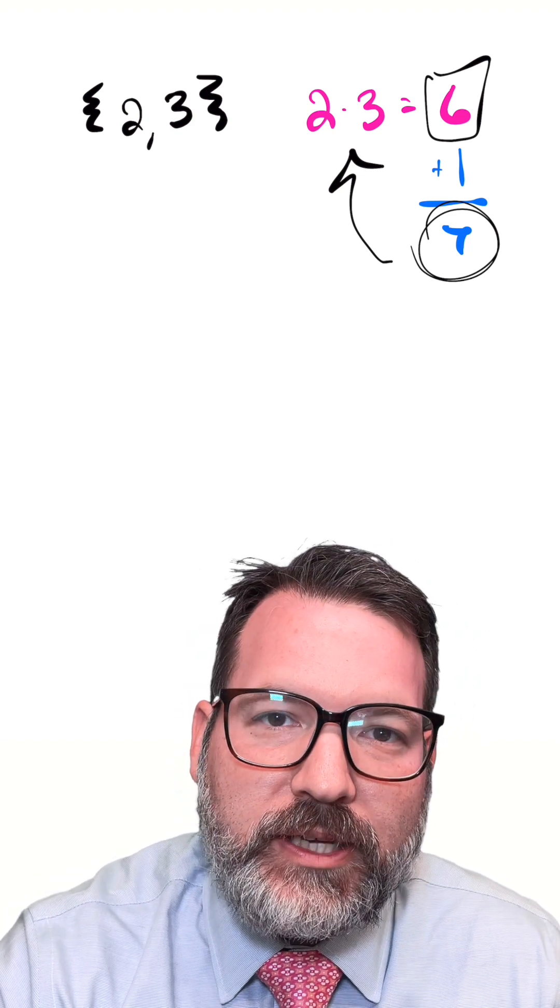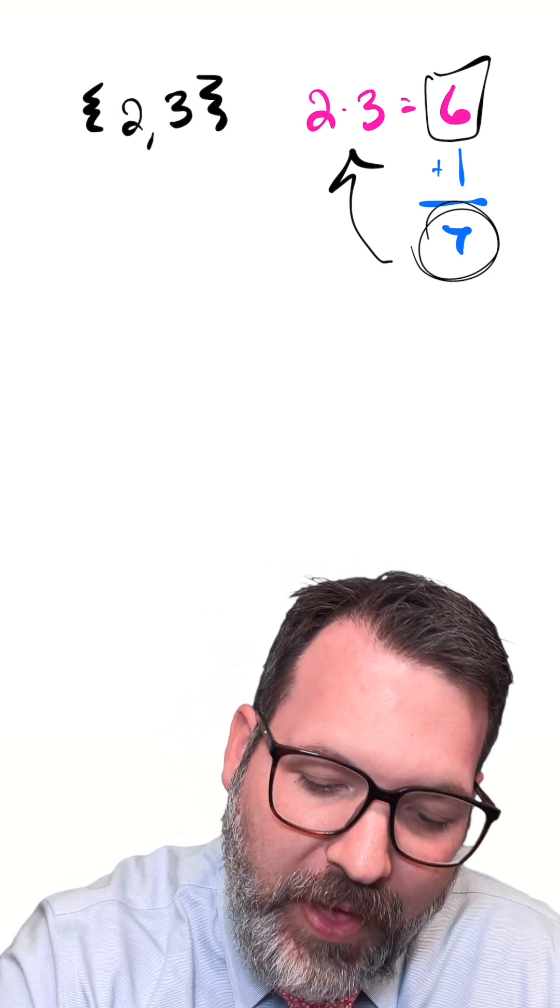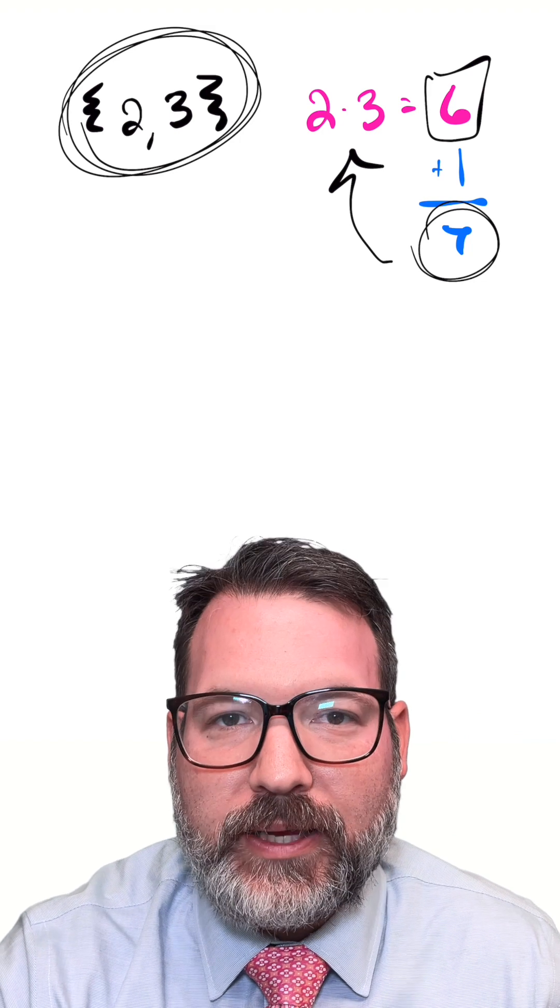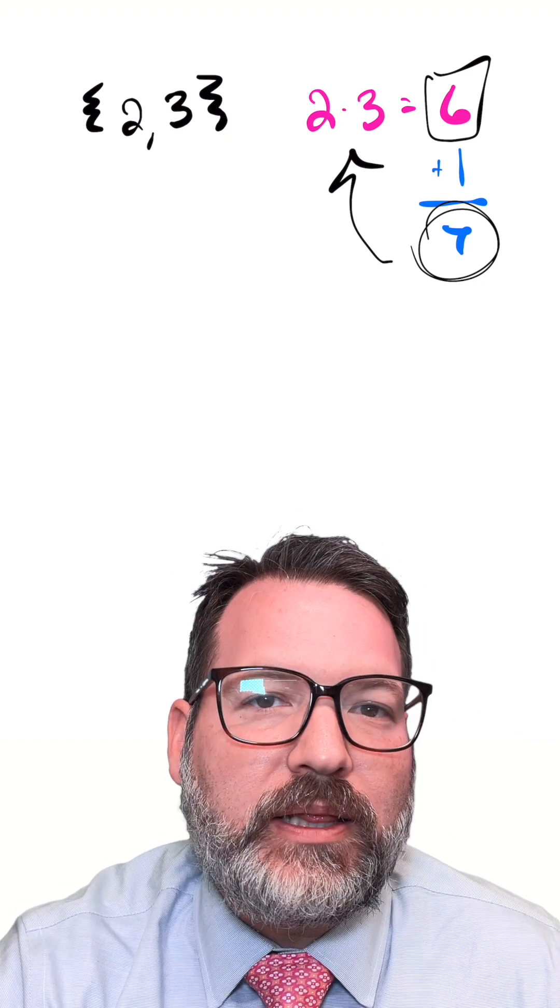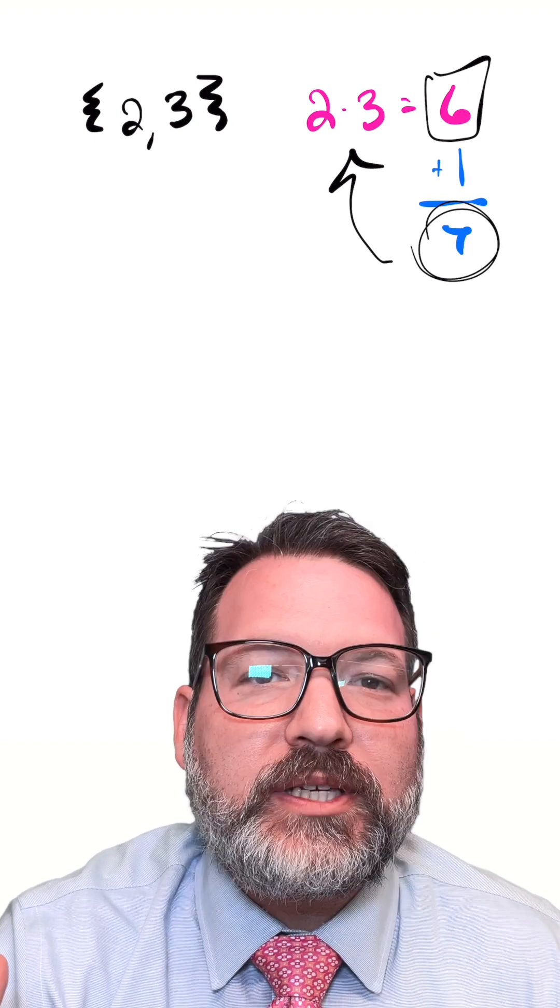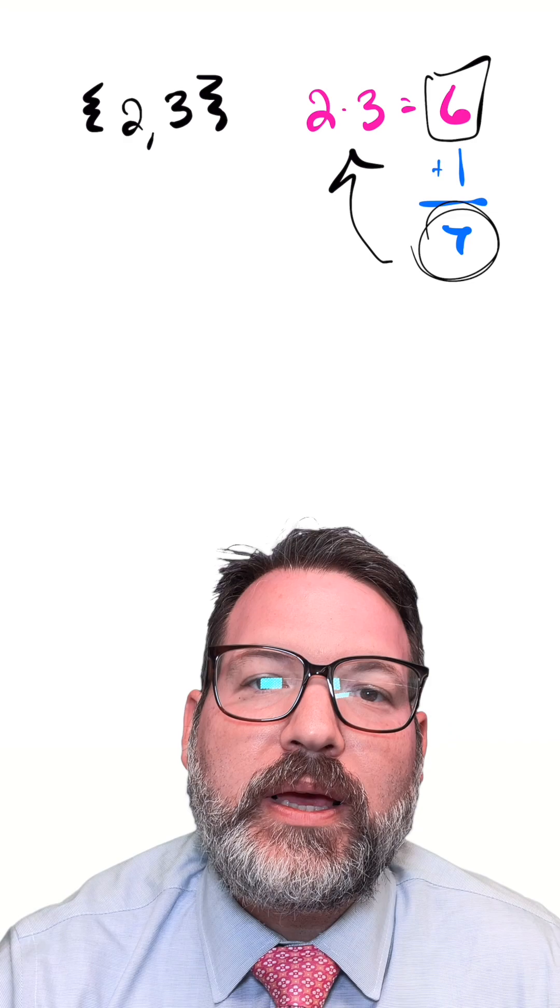Either the number itself is prime, which obviously is the case here with seven, or it's a multiple of some prime number that wasn't on our original list. Either way, the original list must not actually have been the complete list of all possible primes, which shows us any finite list is incomplete. The list of primes must be infinite.